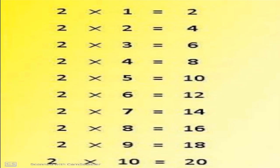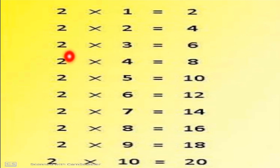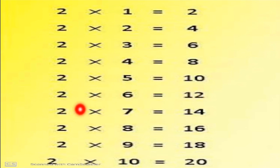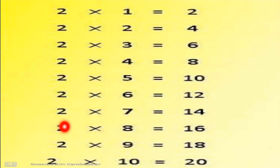This was the introduction of subtracting a single digit number from a double digit number. Let's revise the table of 2 before ending the class. 2 ones are 2. 2 twos are 4. 2 threes are 6. 2 fours are 8. 2 fives are 10. 2 sixes are 12. 2 sevens are 14. 2 eights are 16. 2 nines are 18. 2 tens are 20.